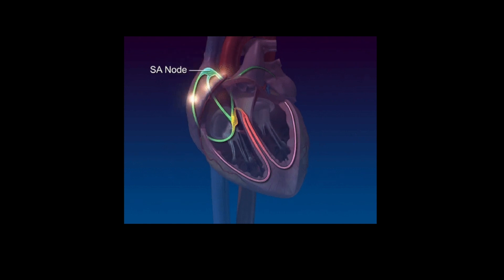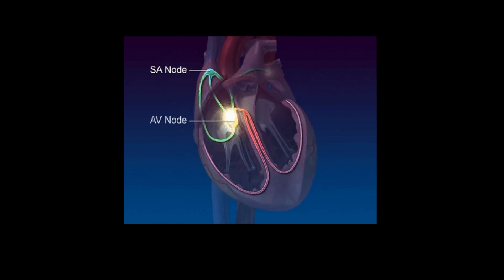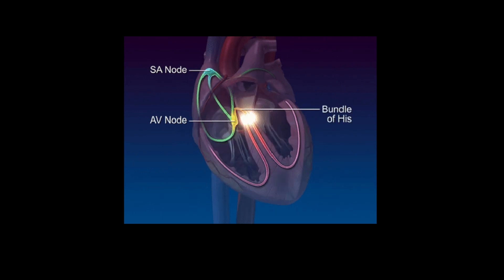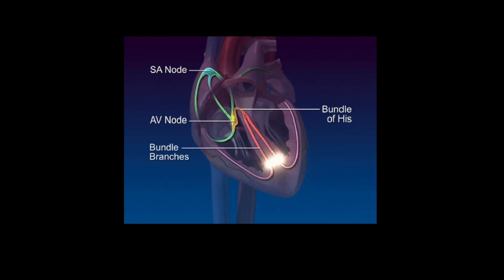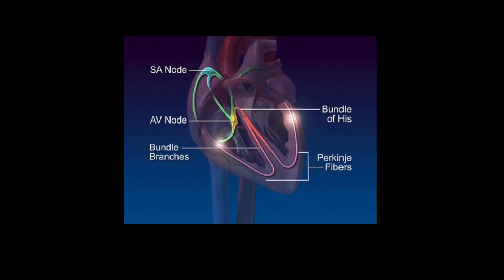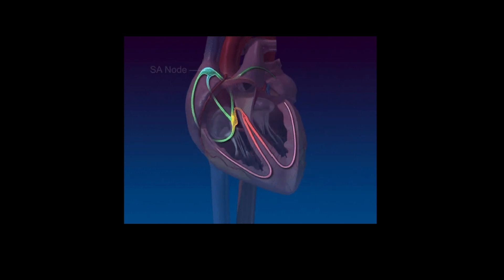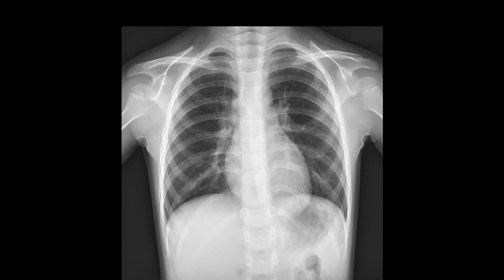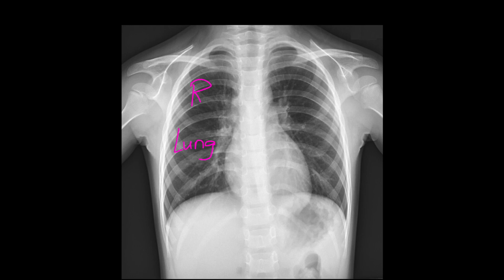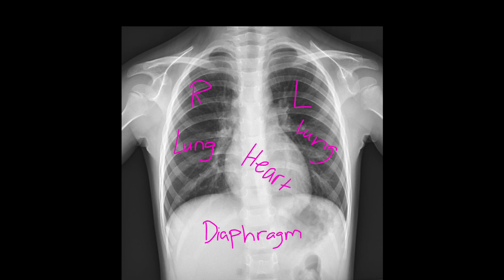Here is a quick animation showing cardiac conduction. That wraps up the quick intro to the electrics of the heart. As a bonus, here are some x-rays of a healthy heart in the thoracic cavity. This picture looks very similar to the sketch we had in the beginning — here are the lungs, and in the center is the heart. At the bottom once again we have the diaphragm completing the thorax compartment.